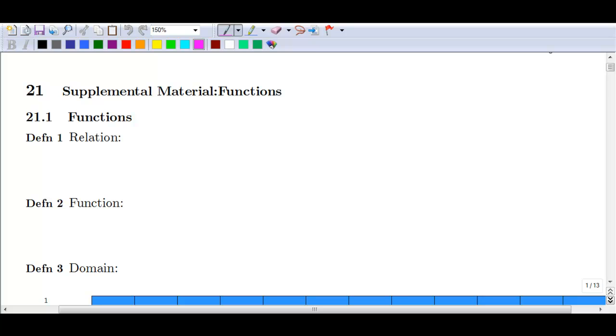Let's give them a proper definition. A relation is just a set of ordered pairs. And again, an ordered pair, typically we deal with x, y.